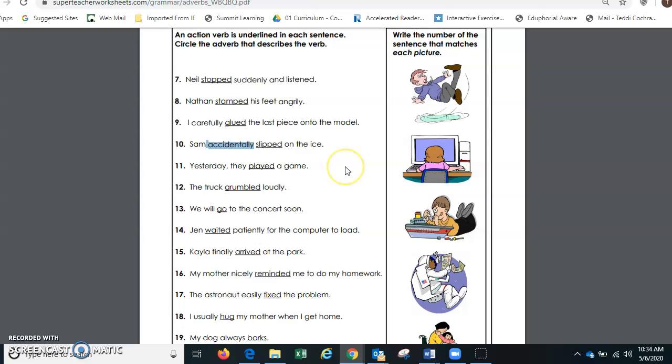Yesterday they played a game. Are they talking about how they played the game, where they played the game, or when they played the game? We can ask these three questions and it will help us find the adverb. How, where, and when? Do you know when they played the game? Yes, they told us yesterday.